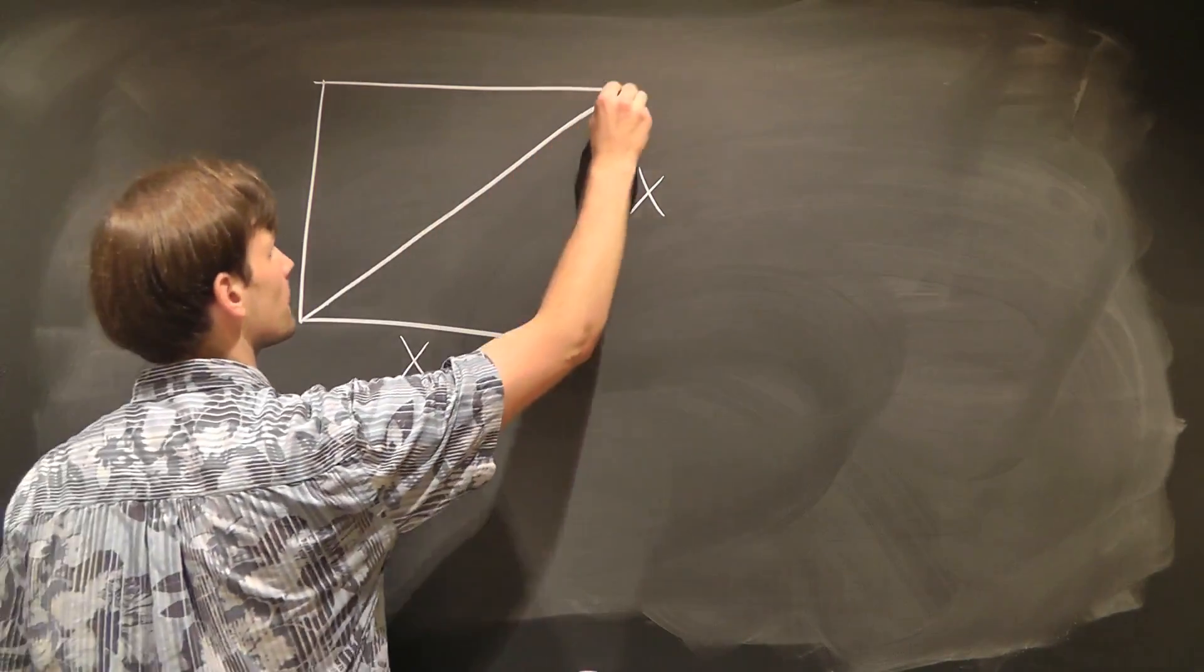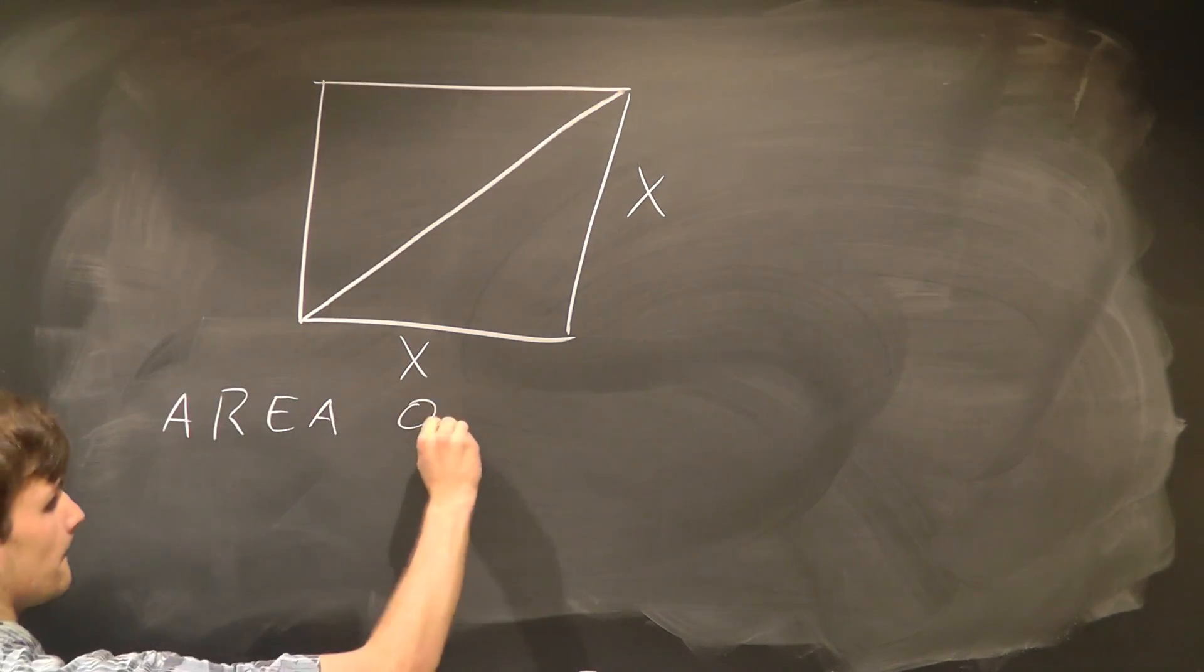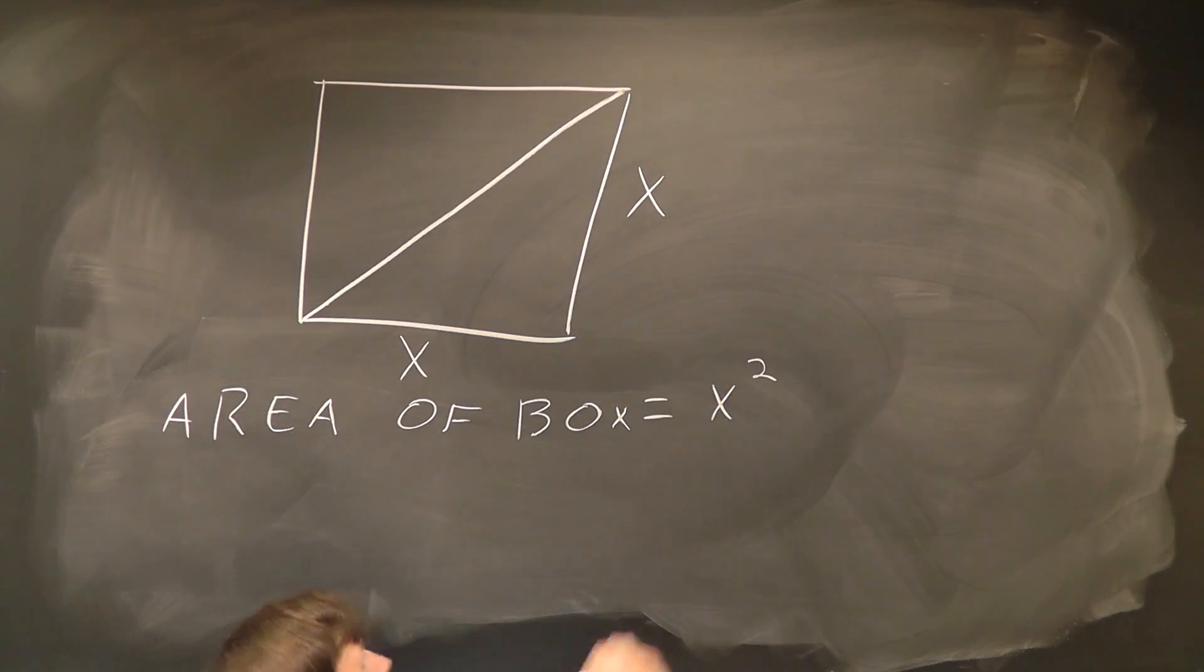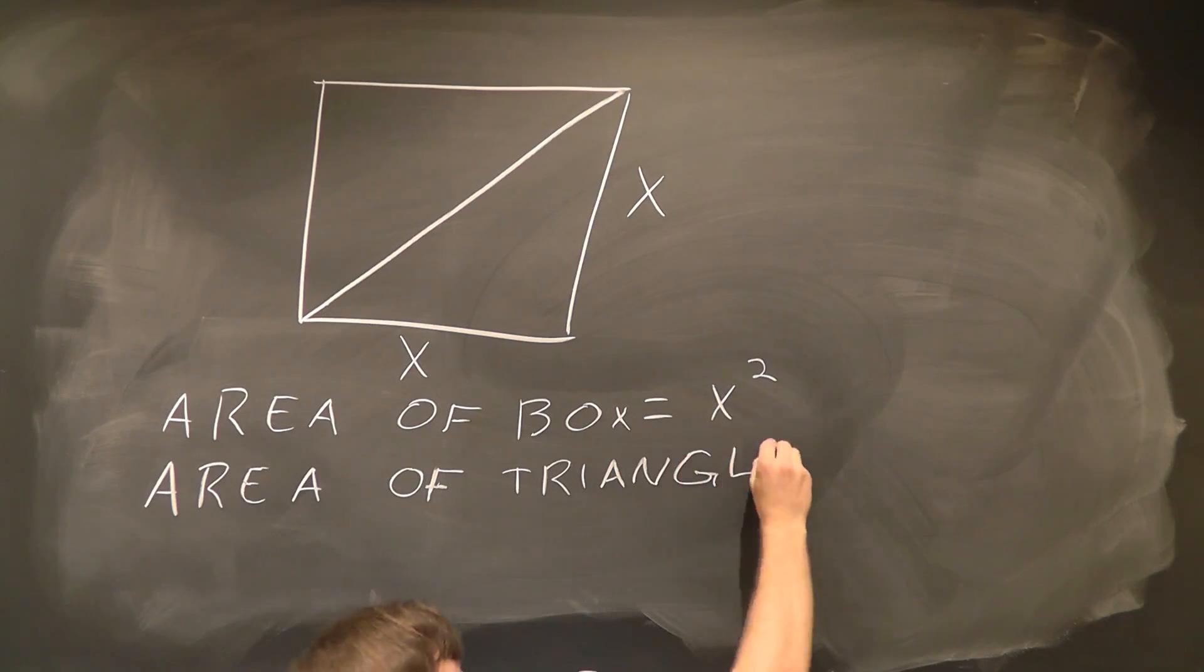Now, obviously, the area of the box is simply the base times the height, or x squared, and the area of the triangle within the box takes up half the space, so it's 1 half of the area of the box, or 1 half x squared.